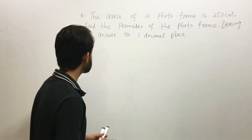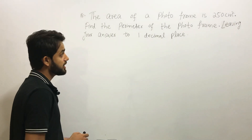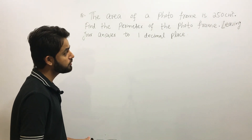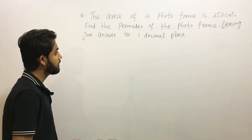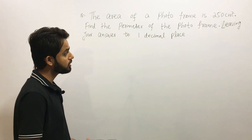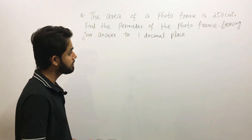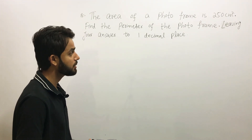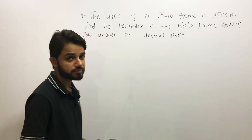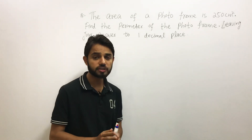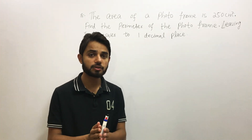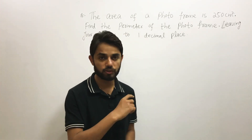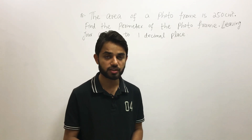The question says: the area of a photo frame is 250 centimeter square. Find the perimeter of the photo frame, leaving your answer to one decimal place. There are two main things we need to understand before moving toward the solution: area and perimeter.